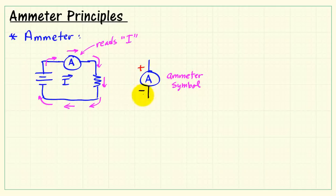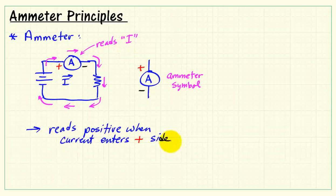Now the ammeter comes equipped with polarity indicators, commonly color-coded as red for positive and black for negative. When the current enters the positive side, the meter reads positive.